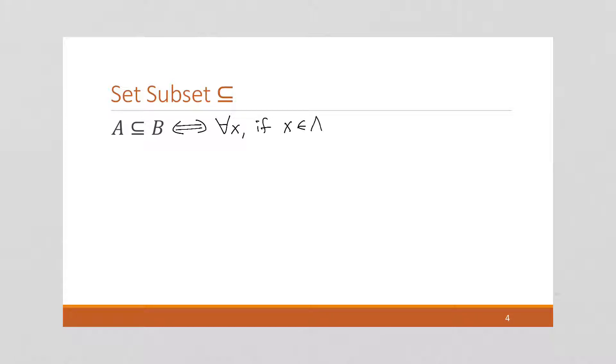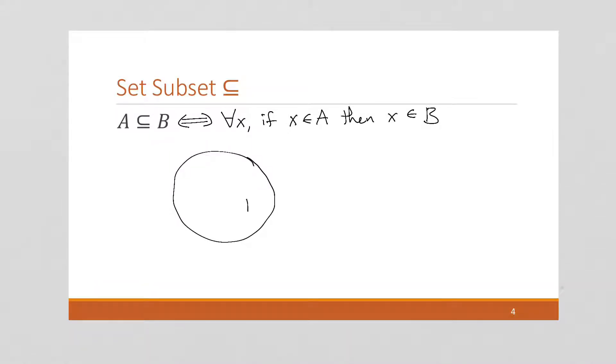Now let's look at set subsets. A is a subset of B if and only if, for all elements X, if X is an element of A, then X is also an element of B. So if we draw A inside B, then A is a subset of B because any element in A is also going to be in B.